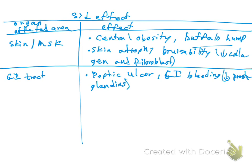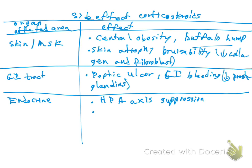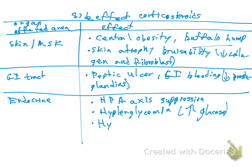The endocrine system is also going to be affected by the side effects of corticosteroids. We need to remember the hypothalamic-pituitary-adrenal (HPA) axis, which is going to be suppressed — there will be suppression of that axis. Also in the endocrine system, the patient can present with hyperglycemia, meaning high levels of glucose. Additionally, the patient can present with hypogonadism, which affects the gonads.